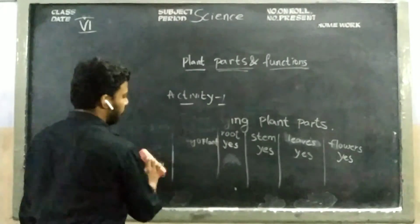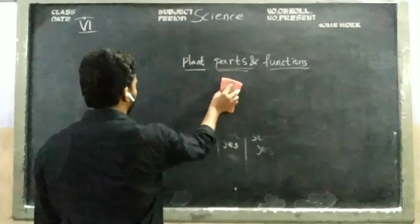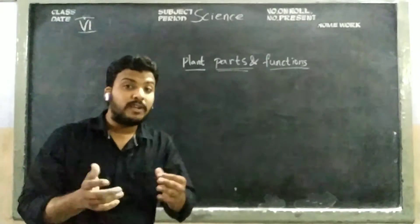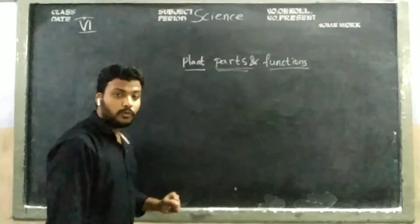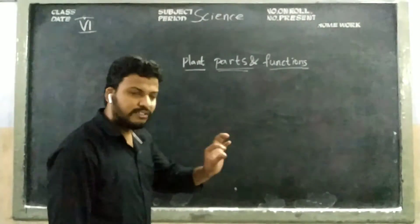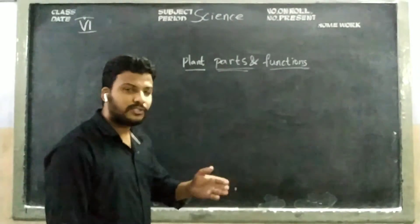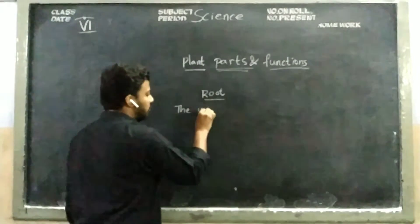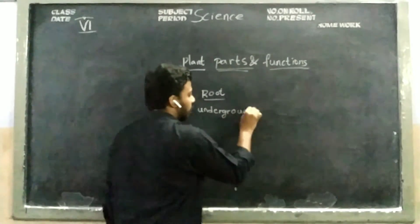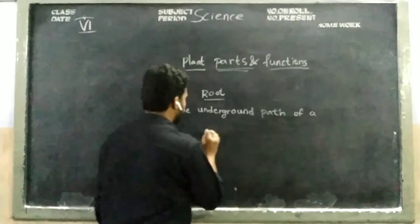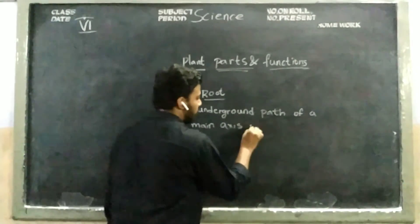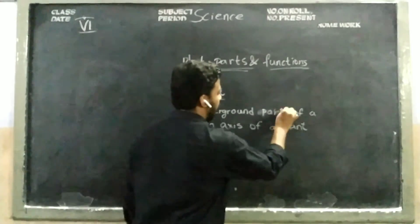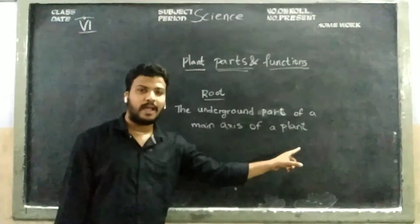We will discuss the first part of a plant. If I ask you what is the major part in your body, you will say it's the brain. Like that, the major part of a plant is the root. Root is the underground part — the underground path of the main axis of the plant.